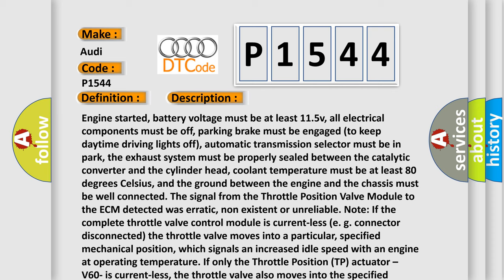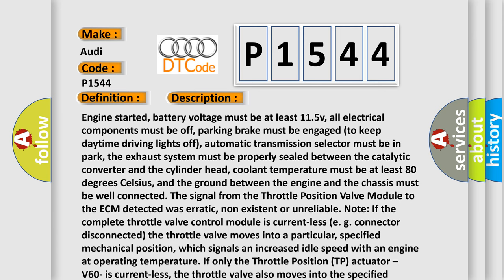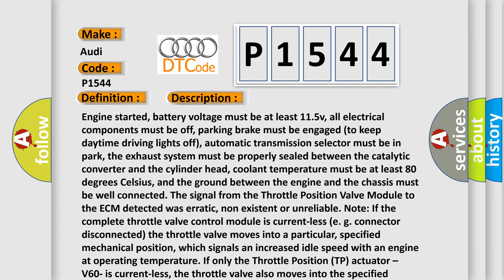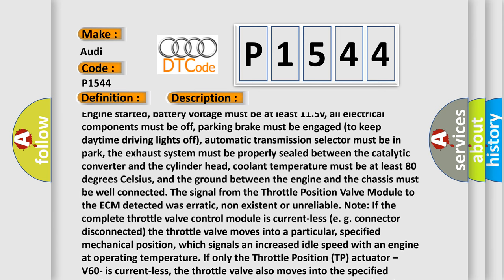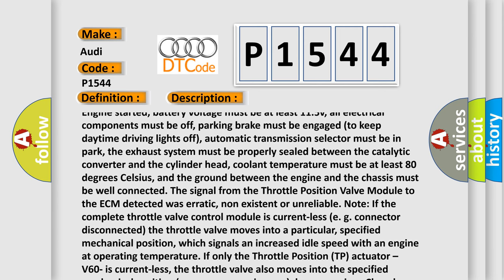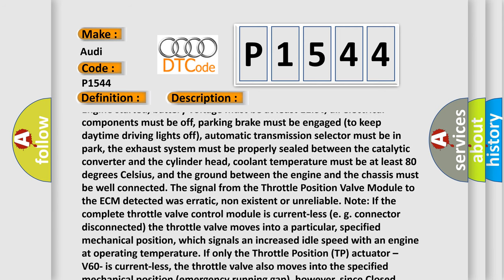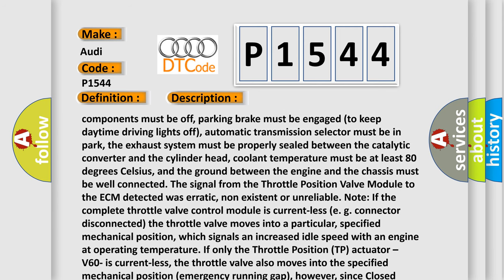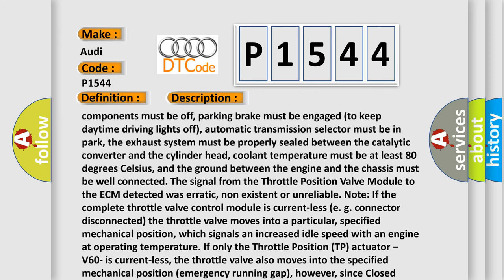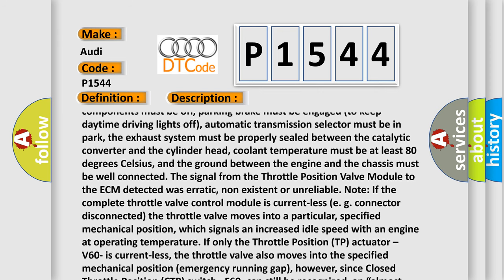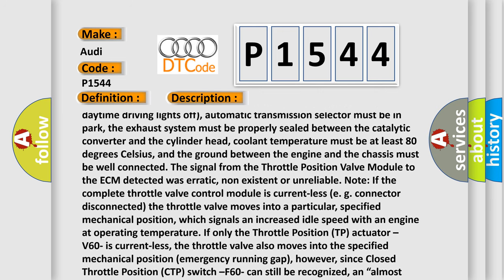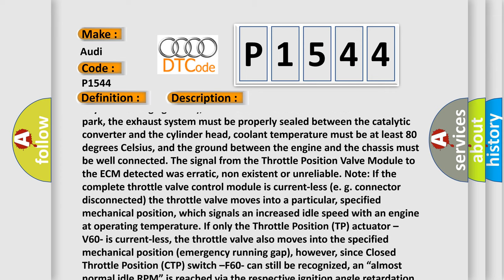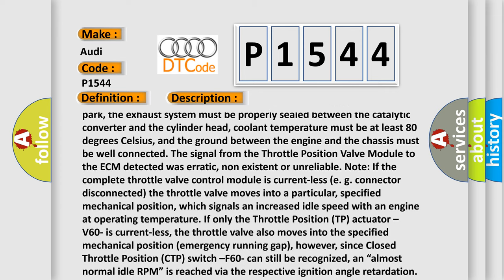Engine started, battery voltage must be at least 11.5V, all electrical components must be off, parking brake must be engaged to keep daytime driving lights off, automatic transmission selector must be in park, the exhaust system must be properly sealed between the catalytic converter and the cylinder head, coolant temperature must be at least 80 degrees Celsius, and the ground between the engine and the chassis must be well connected. The signal from the throttle position valve module to the ECM detected was erratic, non-existent, or unreliable.